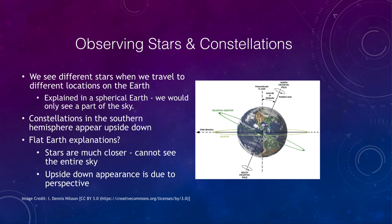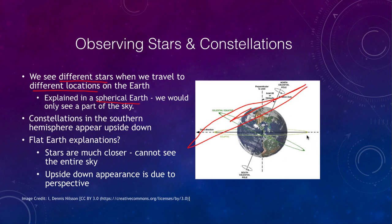Looking at the stars and constellations can also give us evidence that the Earth is spherical. We see different stars when we travel to different locations on Earth. When you are far north you can see only certain constellations that are very far north on the celestial sphere. If you travel further south you start to see other stars not visible from that northern location. This is easily explained on a spherical Earth — from any given location we see roughly half the sky, and for those in the northern hemisphere, stars near the south celestial pole are completely invisible.